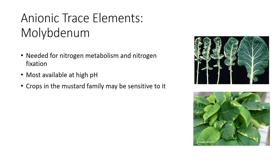Molybdenum, the nutrient with the smallest plant requirement except nickel, is necessary for proper nitrogen metabolism by plants and for nitrogen fixation by both symbiotic and free-living bacteria. It gathers in soil organic matter and, unlike other micronutrients, is most available at high soil pH. Shortages are most common on acid, leached, and low organic matter coarse soils, as well as acid peats.